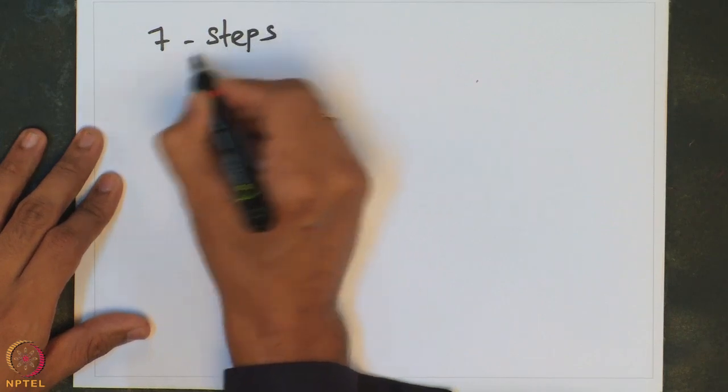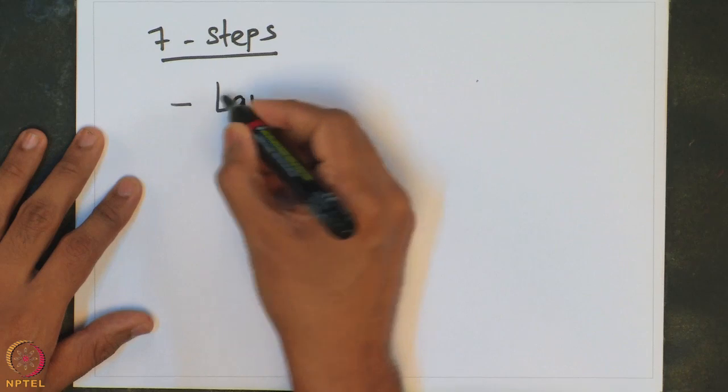Each of these steps is very crucial, and each is governed by different principles. What we are interested in is the overall reaction rate, because that directly affects the productivity of that particular reaction. How much product species is formed strongly depends on the rate at which the reaction is actually happening. Since there are 7 steps involved, the question arises: which of these 7 steps controls the reaction rate? This is what is called the rate-controlling step.